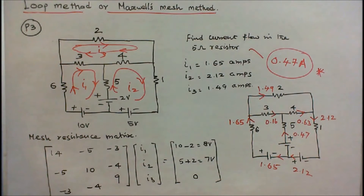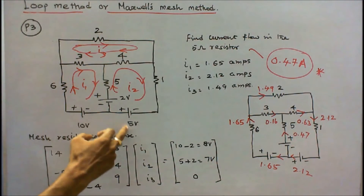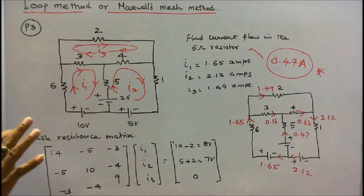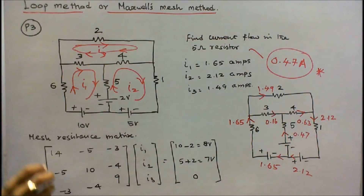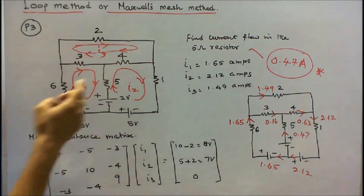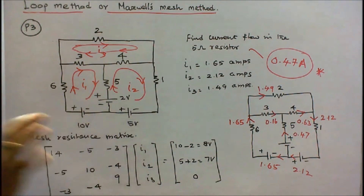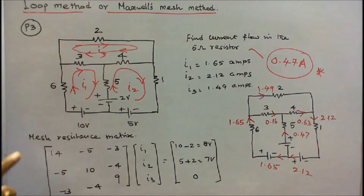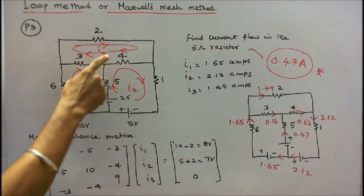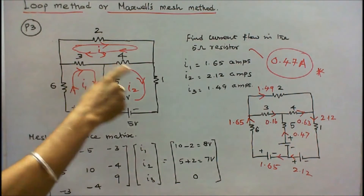Problem number 3. Three voltage sources — 10 volt, 5 volt, 2 volt — and 6 resistors — 1 ohm, 2 ohm, 3 ohm, 4 ohm, 5 ohm, and 6 ohm — are connected as shown in the figure. The question is: find the current flow through the 5 ohm resistor. There are three loops — loop 1, loop 2, loop 3 — with loop currents in the clockwise direction.